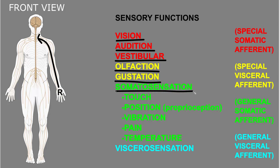There are multiple senses of the body collectively called somatosensation. These include the senses of touch, position of body parts — which can also be called proprioception — senses of vibration, pain, temperature, and others.